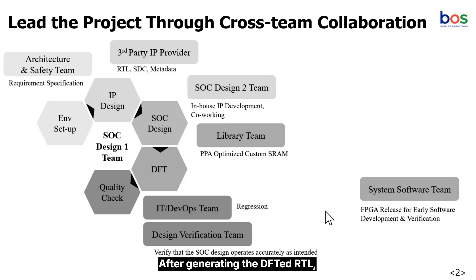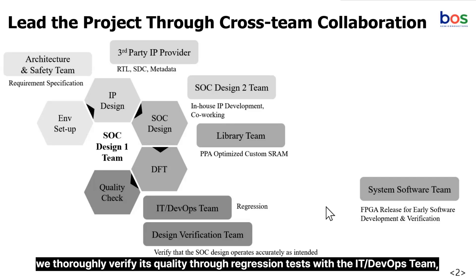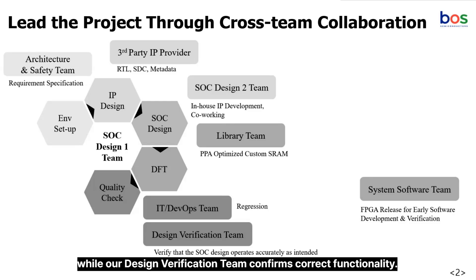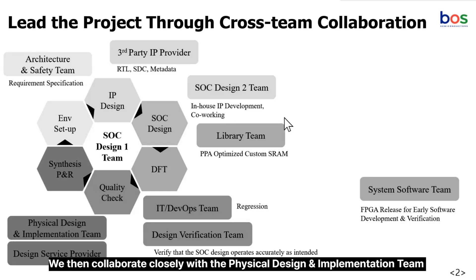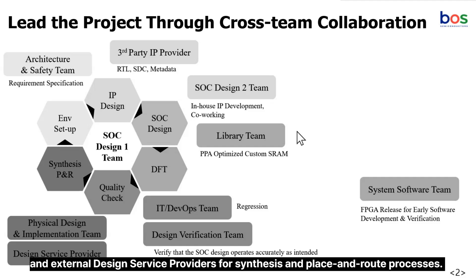After generating the DFTD-RTL, we verify its quality through regression tests with the IT DevOps team, while our design verification team confirms correct functionality. We then collaborate closely with the physical design and implementation team, and an external design service provider handles the place and route process.